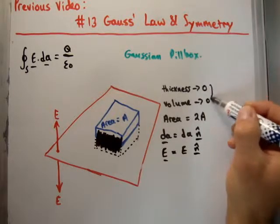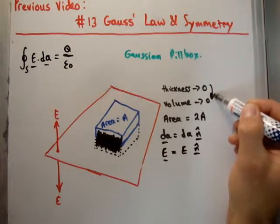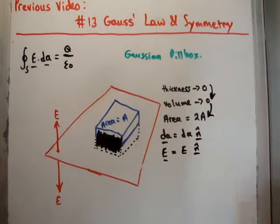which will shrink the volume down to 0. And we're left with the area being twice A, because we have half the area on top, but we also have the same amount below. So we have total area of 2A.